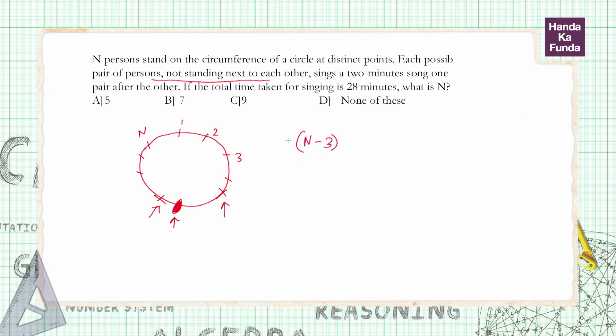How many people are there? N. So the total number of songs, will it be N into N minus 3? No, total number of songs will not be N into N minus 3.